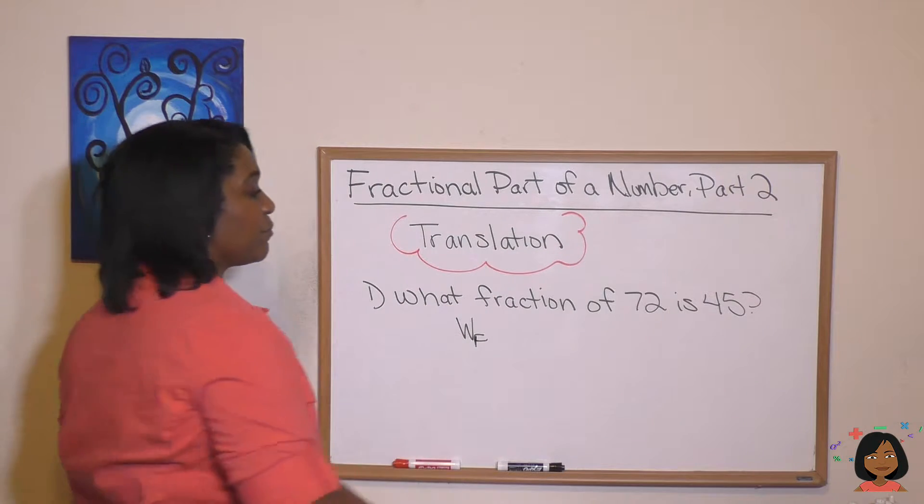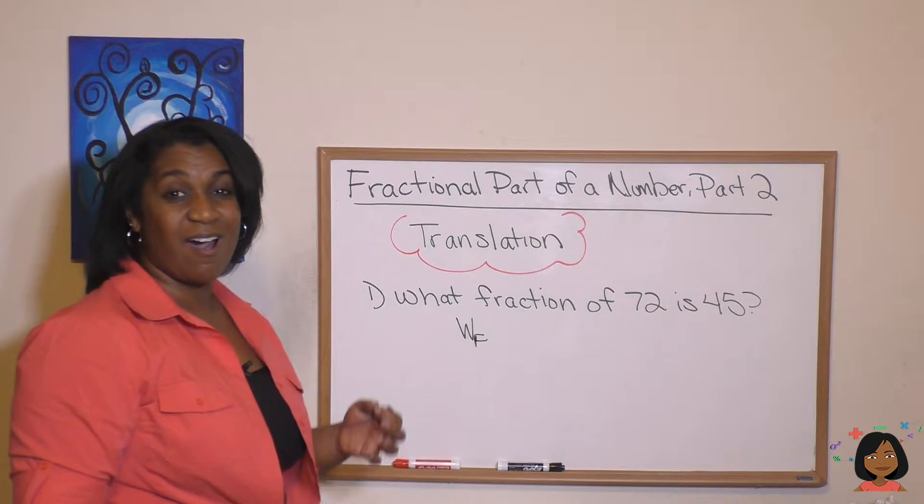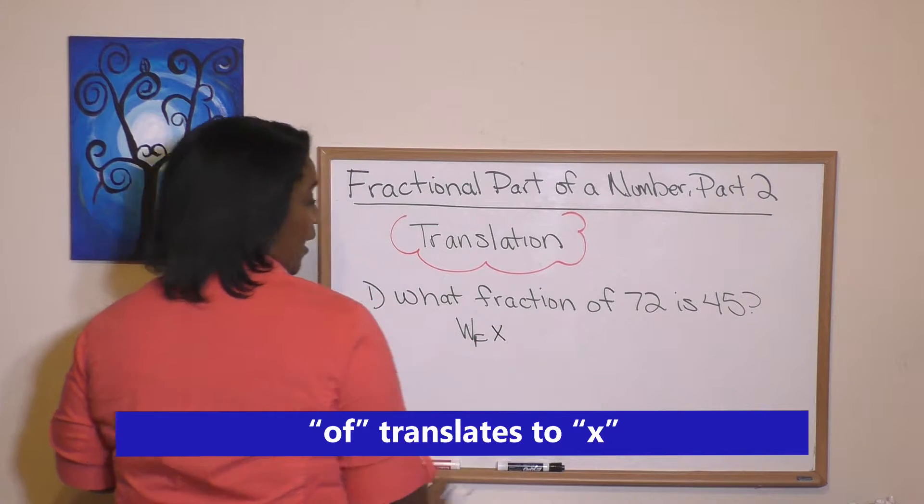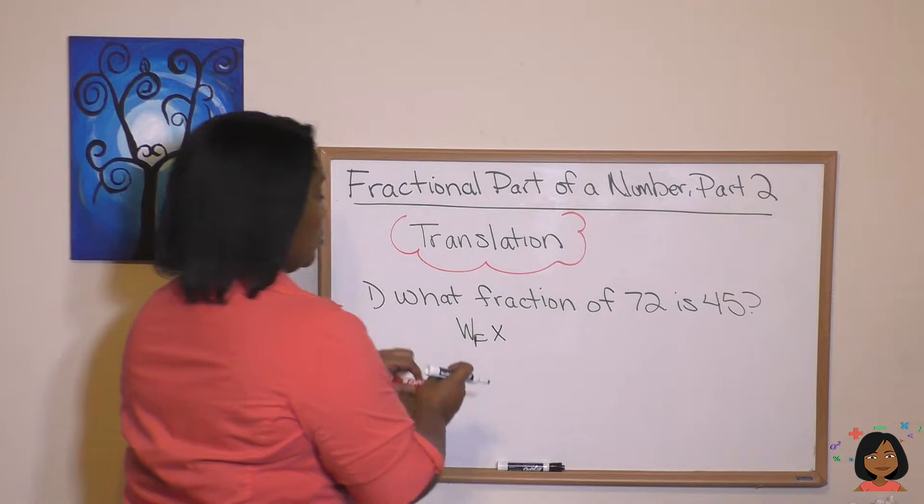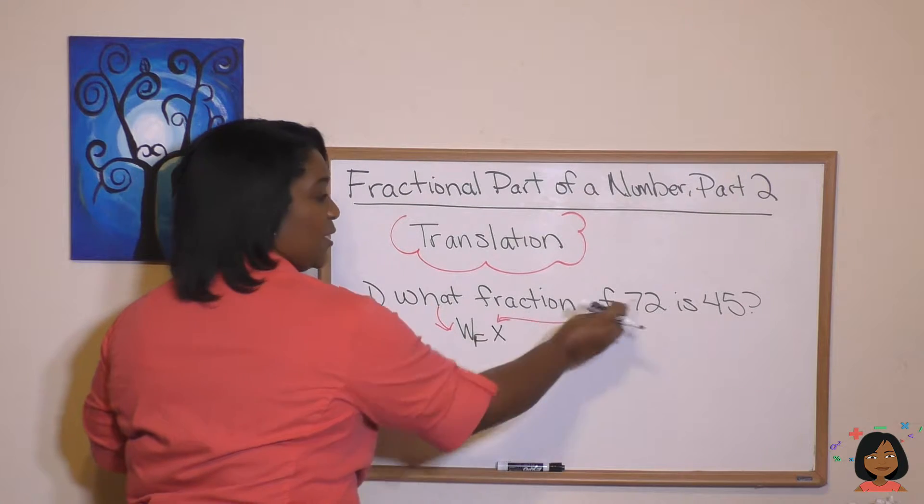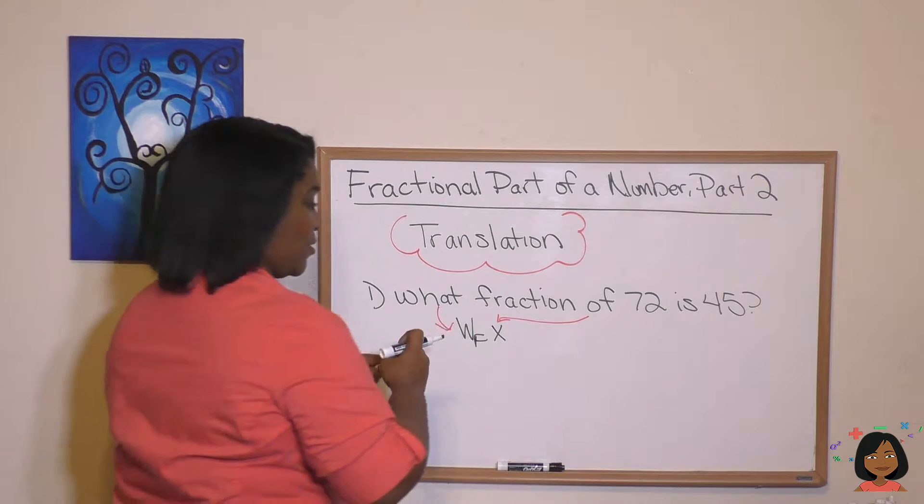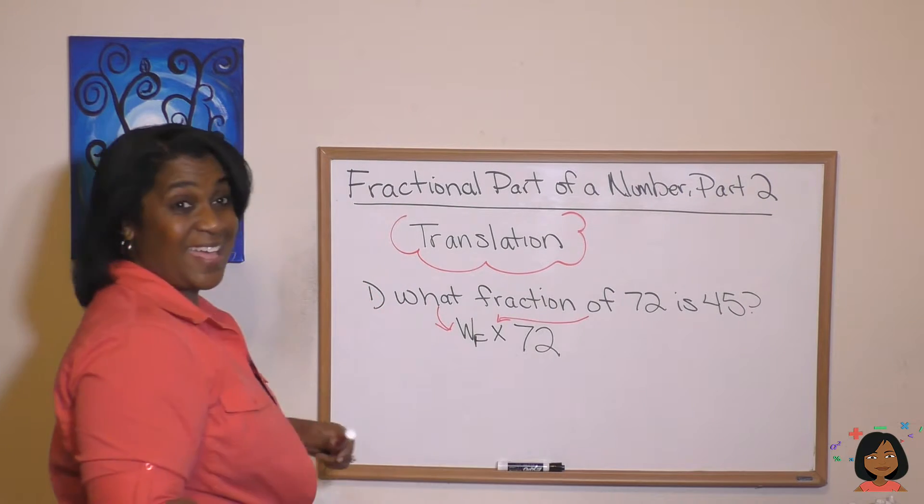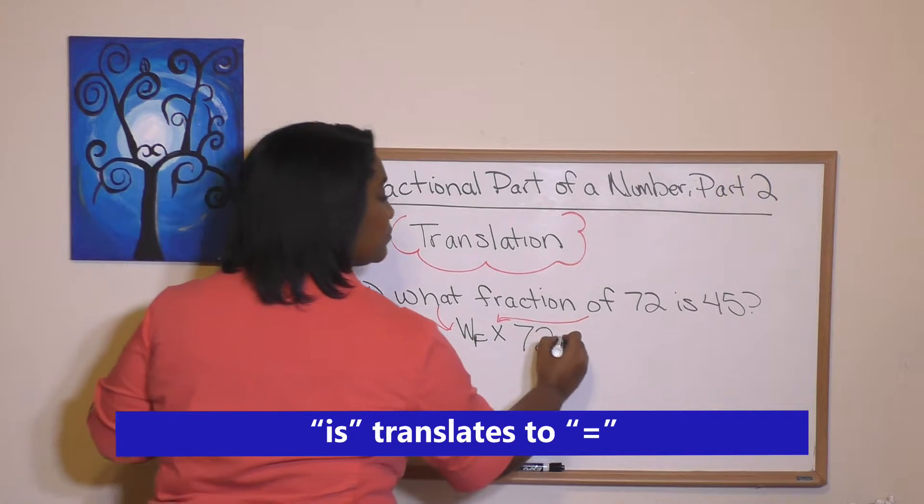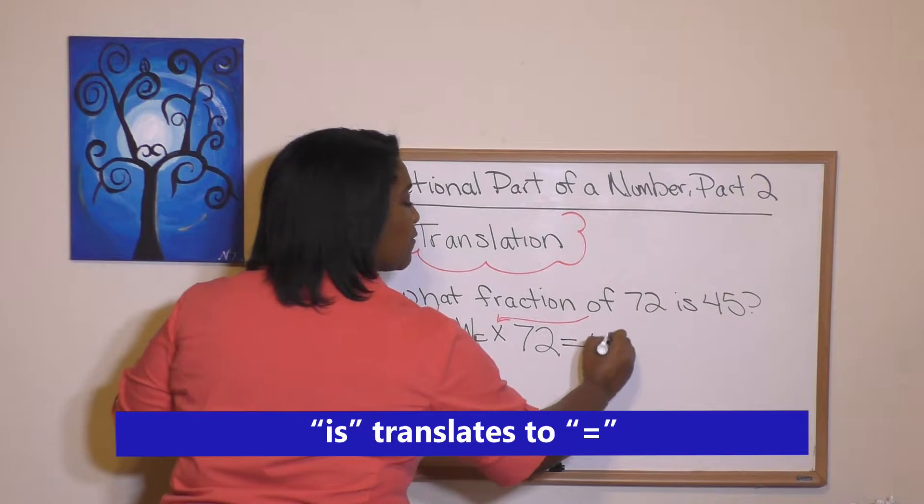What fraction of—we know that of translates in math to a multiplication sign. What fraction of 72, well that's already a numeric phrase, so just leave that as it is. And then is in math translates to an equal sign, and we end it with a 45.